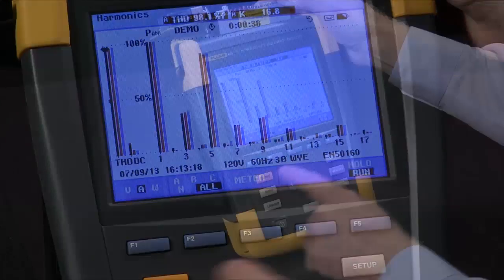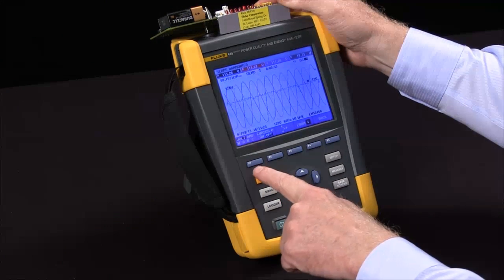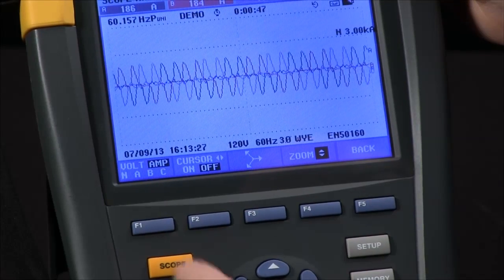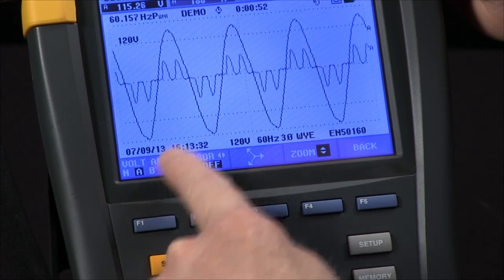To see these signals, I can hit the scope button and I'll toggle over to the scope. I can switch to amperage and over to a phase, so I can see phase A.